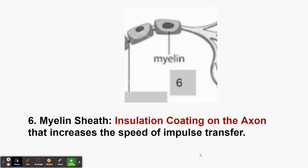If you practice, practice, practice, this part of the cell starts to grow, and those cells can pass messages faster and faster. So you can answer questions better, play a guitar better, play a sport better, or calculate math problems faster if the myelin sheath is thicker.